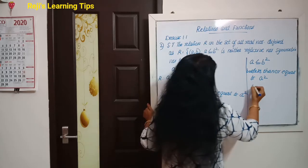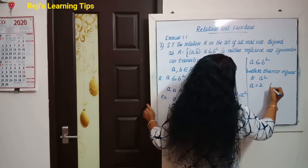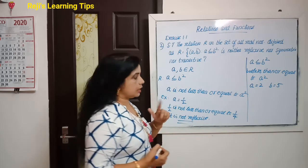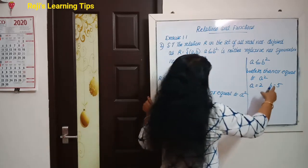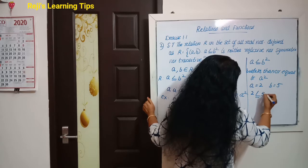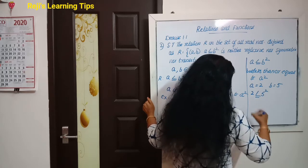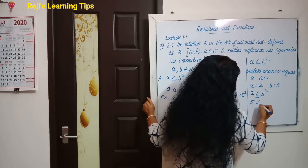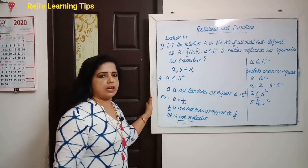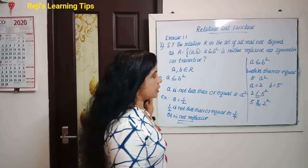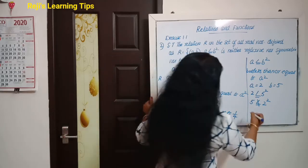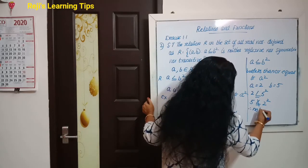Example: let a = 2, b = 5, where a and b belong to real numbers. Then 2 ≤ 5² = 25 is correct. But does 5 ≤ 2² = 4 hold? No, 5 is not less than or equal to 4. Therefore it is not symmetric.